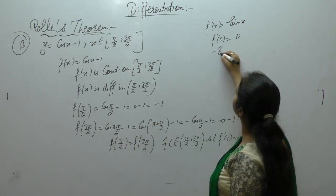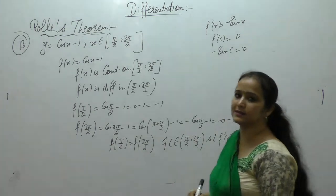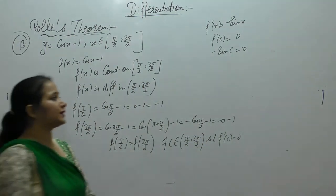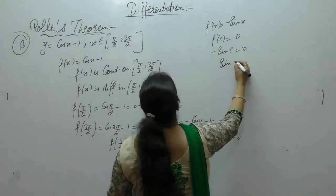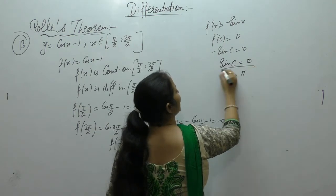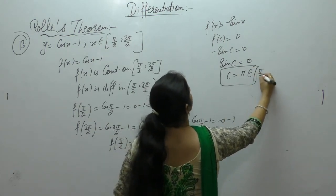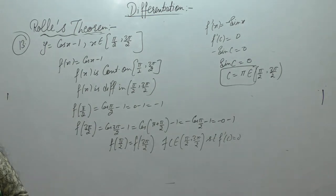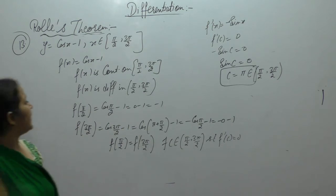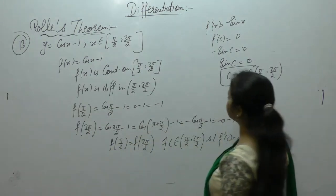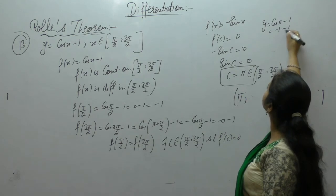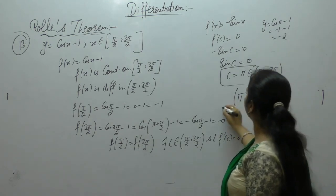Now f'(x) = -sin x. Setting f'(c) = 0: -sin(c) = 0, so sin(c) = 0, giving c = π. Since π belongs to (π/2, 3π/2), the condition is satisfied. The tangent is parallel to the x-axis at x = π. When x = π, y = cos(π) - 1 = -1 - 1 = -2. Therefore the required point is (π, -2) and Rolle's theorem is verified.